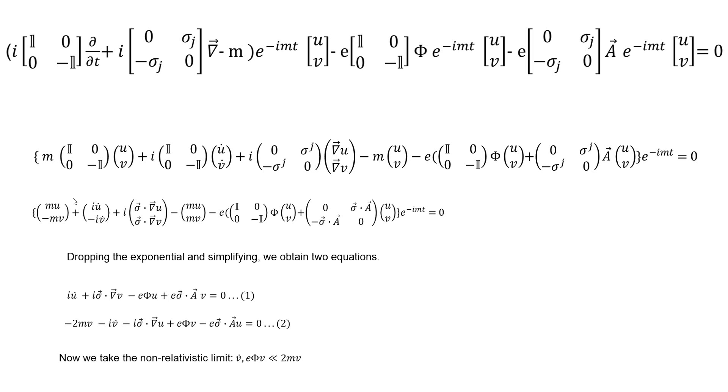We get this equation. Now we have two equations because we have two column vectors, or two row vectors. Dropping the exponential term, we have two equations, which is i u dot plus i sigma vector dot into the gradient of v minus e times the scalar electromagnetic potential times u plus sigma a, which is the vector potential of the electromagnetic four vector, times v equals zero. The second equation is minus 2mv minus i v dot minus i sigma dot gradient of u plus e, which is the electromagnetic scalar potential, times v minus e sigma dot a u equals zero.